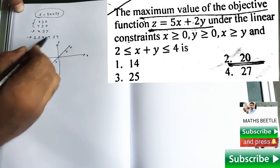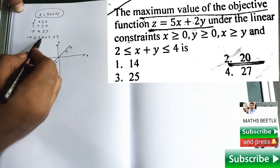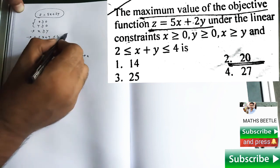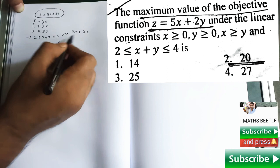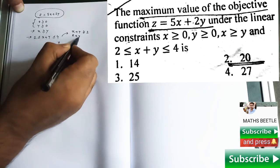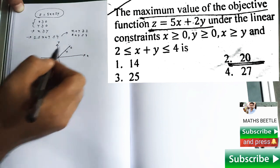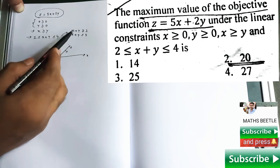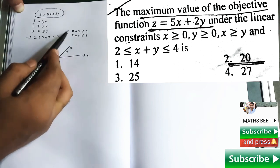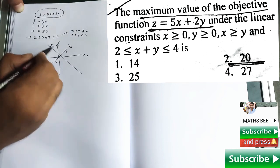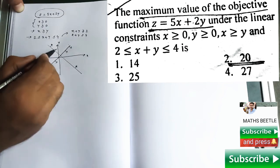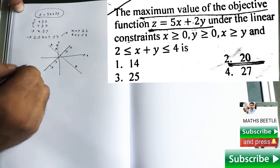Now come to the fourth constraint. Actually it contains two constraints itself. First one is x plus y greater than or equal to 2. Second one is x plus y less than or equal to 4. When you try to plot the first one, then you have this kind of inequality in your hand.